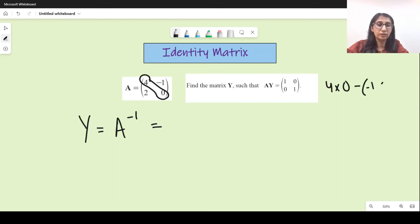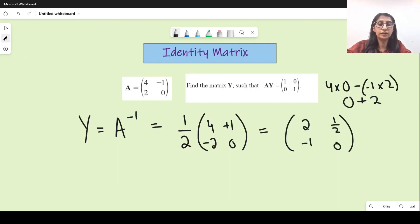So we write 1 over 2, and then we change the positions of 4 and 0, and we change the sign of 2 which becomes minus 2, minus 1 which becomes plus 1. So either you leave the answer like this, or this becomes 2, minus 1 half, and 0. One half gets multiplied with each individual entry inside.